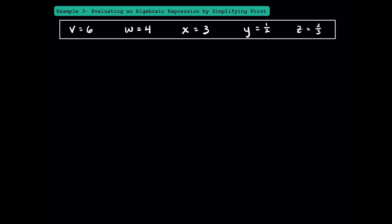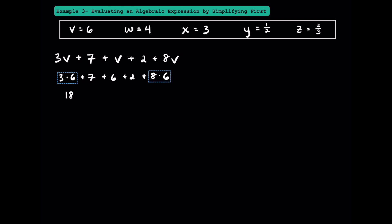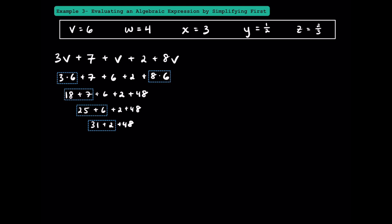Here in example 3, we're going to practice evaluating algebraic expressions by simplifying first. In each of the following examples, v will equal 6, w will equal 4, x equals 3, y equals 1 half, and z equals 2 thirds. For this first example, I'm going to evaluate this algebraic expression without simplifying first. We would substitute the value of v in right away. Since v equals 6, we would write 3 times 6, plus 7, plus 6, plus 2, plus 8 times 6. Since multiplication is more important than addition, we can multiply 3 times 6 to get 18, and multiply 8 times 6 to get 48. Going left to right: 18 plus 7 is 25, plus 6, plus 2, plus 48. 25 plus 6 is 31, plus 2 is 33, plus 48 is 81.